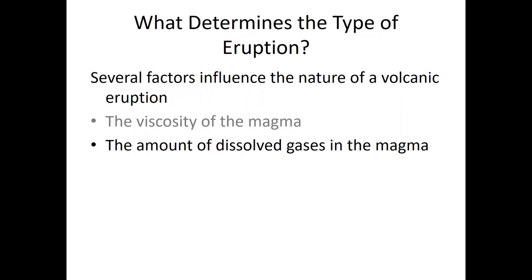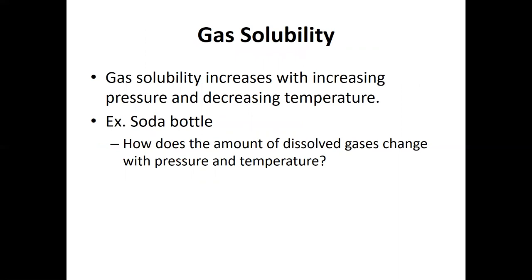Now we understand viscosity and what factors influence magma viscosity. Viscosity is just one factor that determines the type of eruption a volcano exhibits. The second factor, in addition to viscosity, is the amount of dissolved gases in the magma. The most common example of a dissolved gas is carbon dioxide dissolved in a liquid — like soda, seltzer, or beer — which we call carbonation.